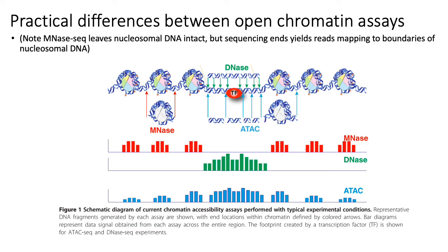This slide summarizes the practical differences you would see in data from DNase1 hypersensitivity, ATAC-seq, and MNase-seq. Both DNase-seq and ATAC-seq profile open chromatin, capturing the major open chromatin regions. ATAC-seq is more sensitive, so it also captures reads mapping to regions between nucleosome-bound DNA, giving higher resolution. MNase-seq, because it degrades open chromatin and sequences only nucleosome-bound DNA, maps reads to regions close to nucleosome-bound DNA.